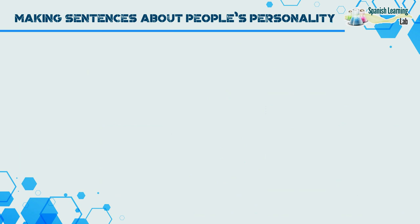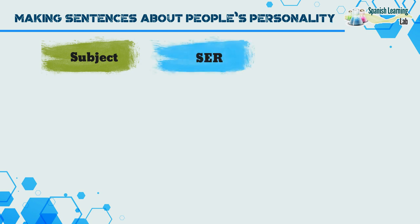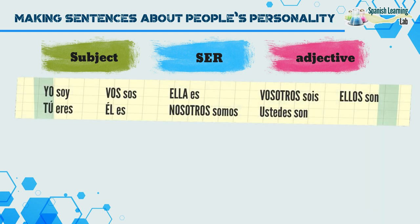Making sentences about people's personality. To form sentences about personality, we will follow the same structure that we use when describing physical traits. Subject + Tú eres / Vos sos / Él es / Ella es / Nosotros somos / Vosotros sois / Ustedes son / Ellos son. These are some examples.